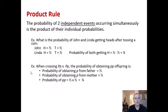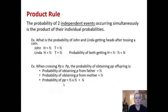Applying the product rule genetically: when crossing a heterozygous purple flower parent with another heterozygous purple flower parent, the probability of their offspring being homozygous recessive for white flowers is calculated by taking the probability of obtaining a recessive gene from the father — one-half — and the same from the mother — one-half — and multiplying them: one-half times one-half equals one-fourth.